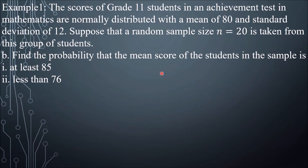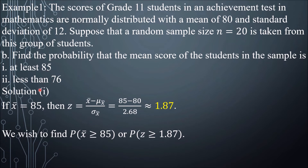Next, find the probability that the mean score of the students in the sample is at least 85, and then less than 76. For the solution of at least 85, x-bar is equal to 85. Using this z-score formula with the given value of 85, sample mean of 80, and sample standard deviation of 2.68, the z-score is approximately 1.87. We wish to find the probability that x-bar is greater than or equal to 85, which corresponds to z greater than or equal to 1.87.